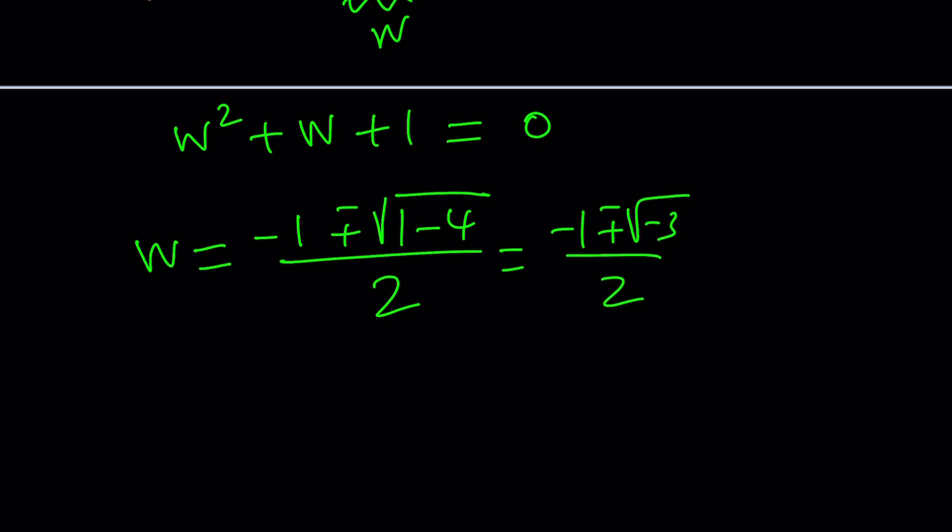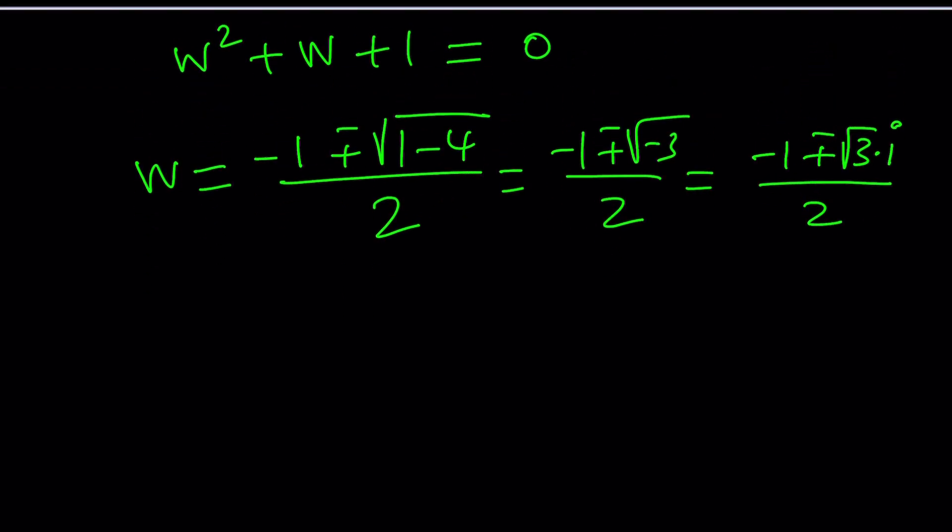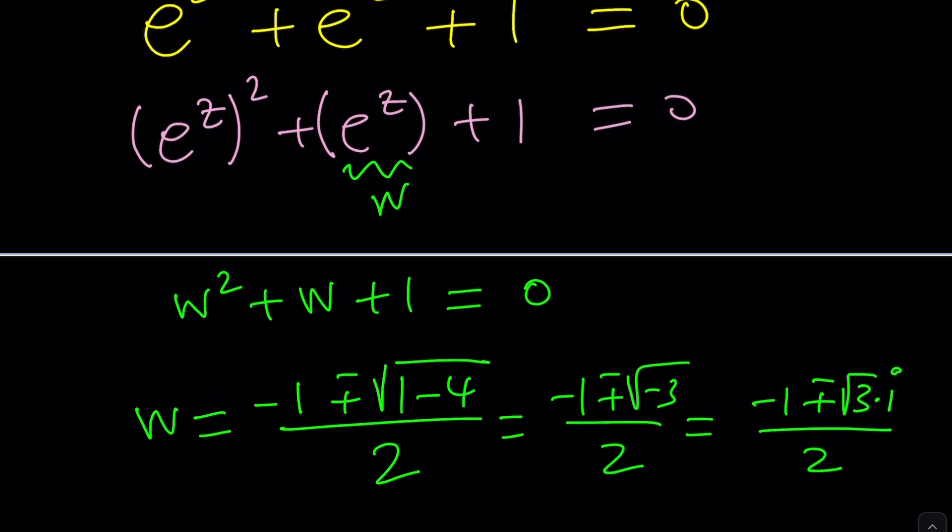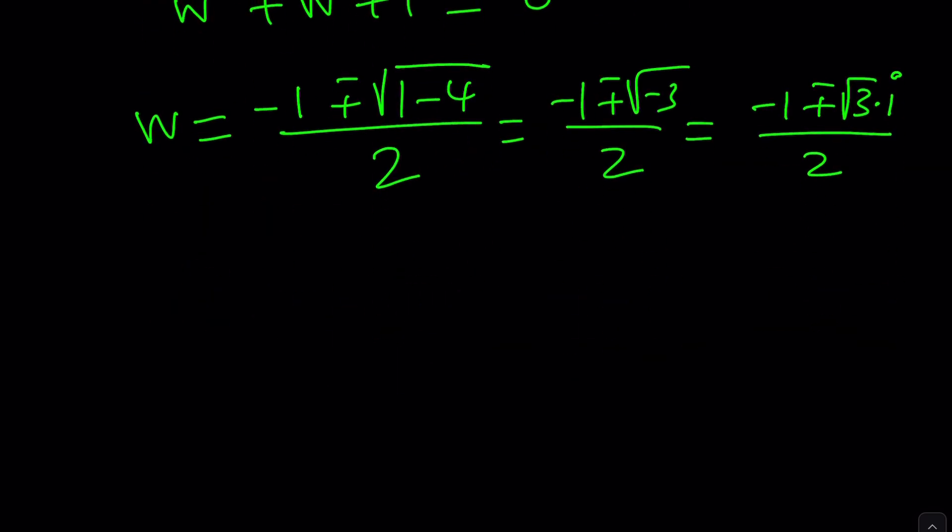Uh-oh. Houston, we have a problem. How do you square root a negative number? In the complex world, everything is possible. You can write it as square root of 3 multiplied by i. So now this becomes a complex number. And there are two values for w. So which one are we going to use? You need to use both because there should be two solutions. Okay. How do you go about solving them? Well, just set w values to e to the z and you should be good to go.